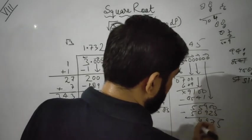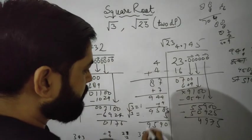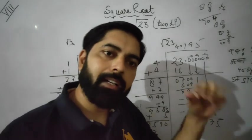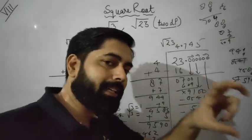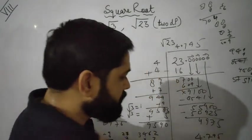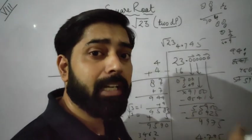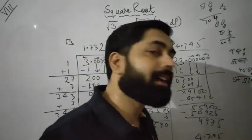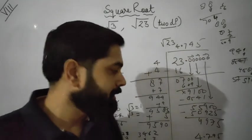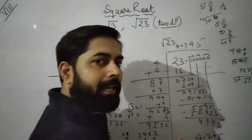After subtraction: 18 minus 9 is 9. Here is 4, and you add the number — 10, 9, 5, 9. Now we have sufficient digits. We convert to two digits after decimal. The answer is 4.795. The question asks up to two decimal places, so we find to three decimal places first. We observe the last decimal digit, which is 5. Since 5 is more than or equal to 5, we add 1 to the previous digit: 9 plus 1 is 10.